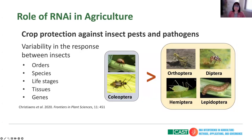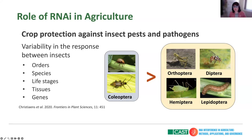Expanding on the variability in response between different organisms — in insects, for example, we already know there is variability between order, species, life stages, tissues, and genes. The order that is most susceptible and where it works best is Coleoptera — so beetles. There are other species where the response to RNAi varies, including Orthoptera, Diptera, Hemiptera, and in Lepidoptera it is considered recalcitrant, so it does not work well. That is one of the challenges we have.